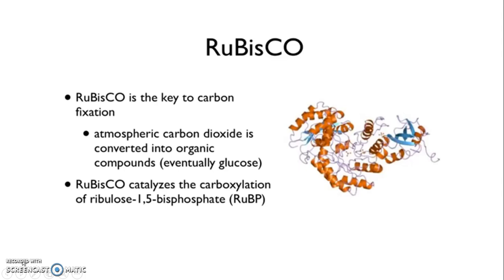Rubisco is the key to carbon fixation, which is our ultimate goal for photosynthesis. Atmospheric carbon dioxide, which is an inorganic compound, is converted into organic compounds, eventually glucose, which is our main target in photosynthesis.